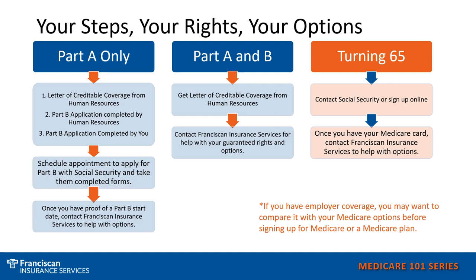If you are going on to Medicare and leaving an employer plan and you only have Part A, then your first step will be to get a letter of credible coverage showing you have had credible coverage through that employer plan. You will also need to fill out a Part B application, and there will be a section in that application that the human resources at your employer will need to fill out. Then you will need to schedule an appointment, whether it be online, in person, or by phone with the Social Security office, to make sure you can enroll in your Medicare Part B. Once you have your Medicare Part B in place, then you can look to enroll in your Medicare Supplements or Medicare Advantage plans.